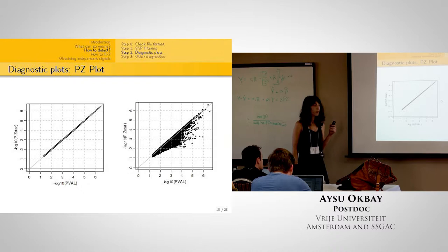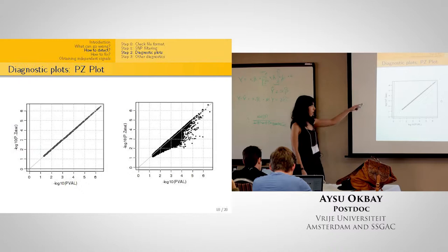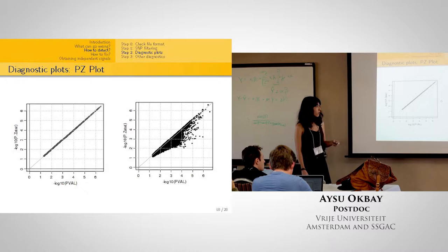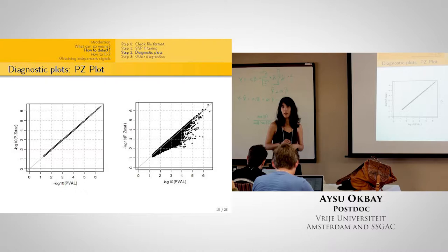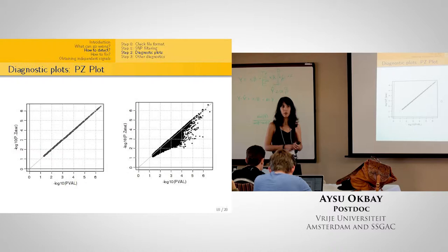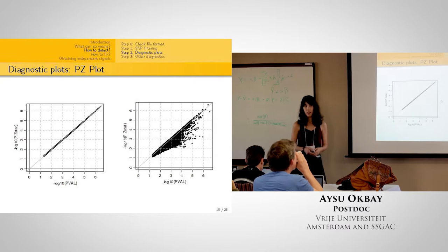P-Z plots: you obtain p-values from the reported beta and standard errors and plot them against the reported p-values in the data — it should all fall on the 45-degree line. A problematic example occurs in some software like SNPtest, where if a SNP is rare or has low imputation accuracy, the software may default to another algorithm, and the p-values from that algorithm don't correspond to those derivable from beta and standard error. You can detect that using these plots.